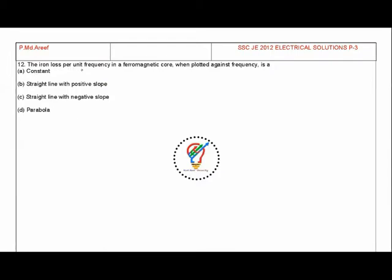The next question: the iron losses per unit frequency in a ferromagnetic core, when plotted against frequency, gives what shape? The iron losses in a ferromagnetic core are given as WE times F squared plus WH times F, where WE times F squared represents eddy current losses and WH times F represents hysteresis losses.